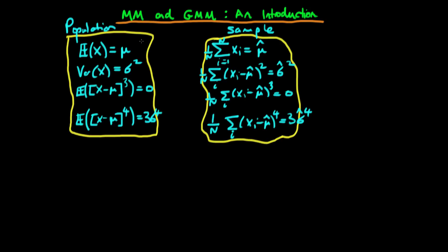Remember in method of moments and generalized method of moments we have a list of population moment conditions which are defined using the expectations operator. Note that this is always the case, it's just that I've chosen to write the second condition in terms of the variance operator, but remember that the variance implicitly contains an expectation operator anyway.